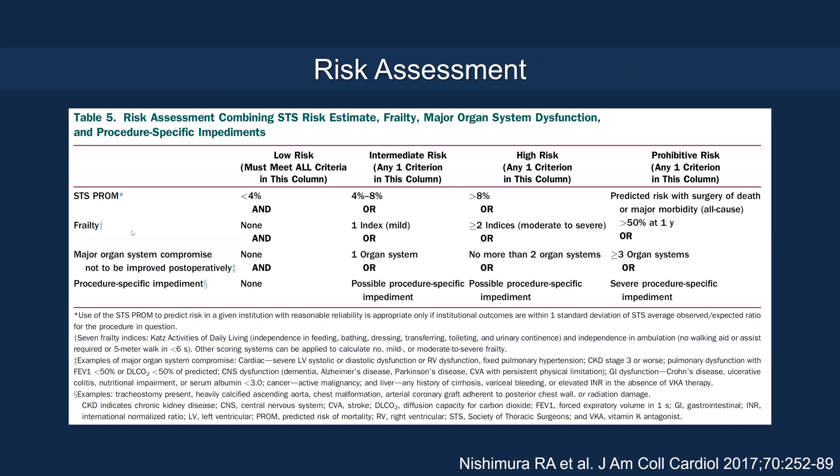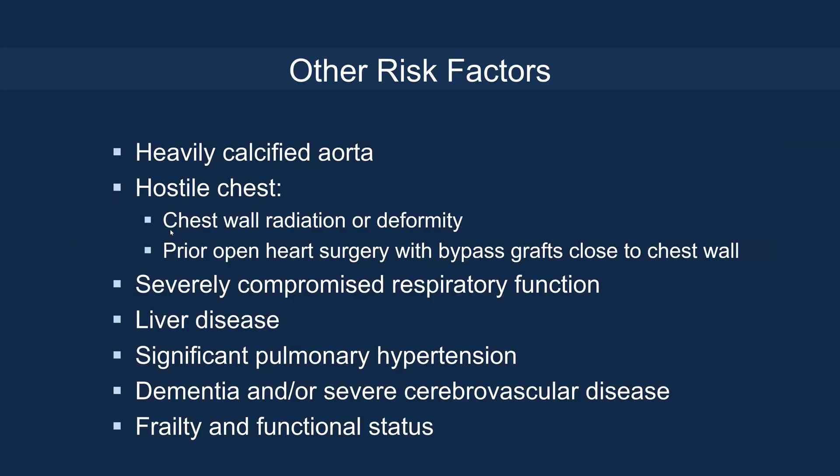A JACC paper published a number of years ago looked at additional factors categorizing surgical risk beyond STS score, such as frailty, organ dysfunction, and procedural complexity. Other risk factors not captured by the STS or EuroSCORE include heavily calcified aorta, hostile chest, severely compromised respiratory function, liver disease, significant pulmonary hypertension, neurocognitive dysfunction, and frailty or poor functional status.